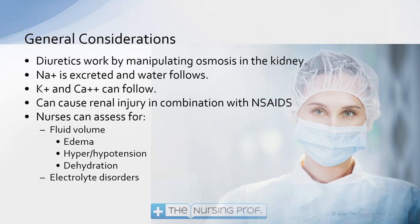Diuretics can cause renal injury when used in combination with non-steroidal anti-inflammatories (NSAIDs). Diuretics lower circulating volume, and NSAIDs cause vascular constriction in the kidney, which also lowers circulating volume there. In combination, this can result in insufficient volume to perfuse the kidney itself, leading to ischemia, necrosis, and acute renal injury. Always use the lowest dose of NSAIDs for the shortest period possible, especially in patients using diuretics.